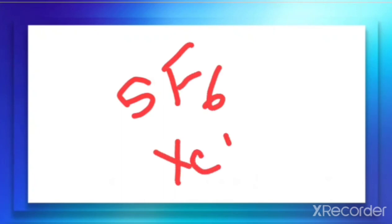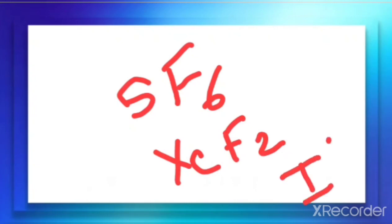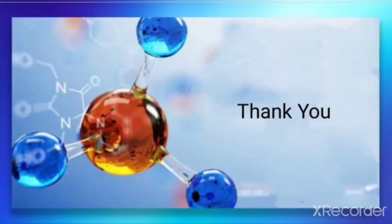Some examples you should try by yourself: SF₆, XeF₂, and IF₇. Use the chart to find total electron pairs from the Lewis structure and determine the geometry and shape for these molecules. This is all about VSEPR theory — Valence Shell Electron Pair Repulsion theory — which is a quite important theory for describing the shape and structure of molecules. Have a nice day.